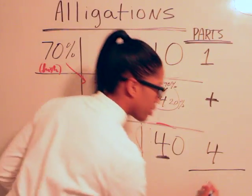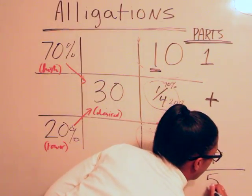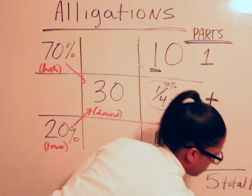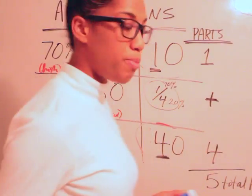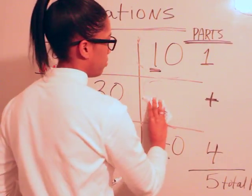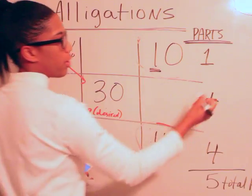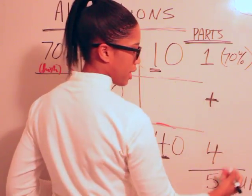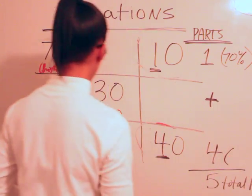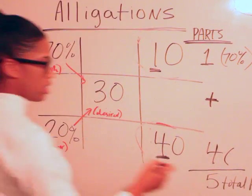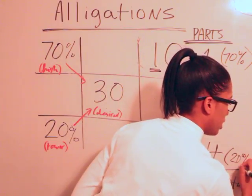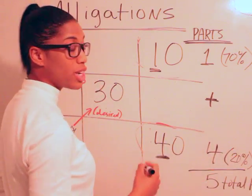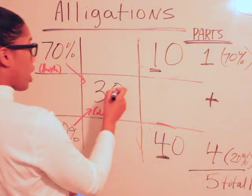If we add all of these parts together though, however, we get five total parts. We get five total parts. So basically this is what we know: we know that one part of the 70% elixir and four parts of the 20% alcoholic elixir would give us five total parts.